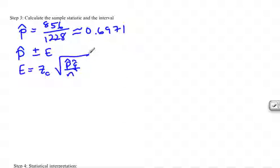So we have to find out, we know what p-hat and q-hat are. q-hat, as a reminder, is just 1 minus p-hat. We just did that. And it turns out that that is equal to 0.3029. I apologize for that. And we know what n is. n was 1,228. But we do need to find the z sub c.